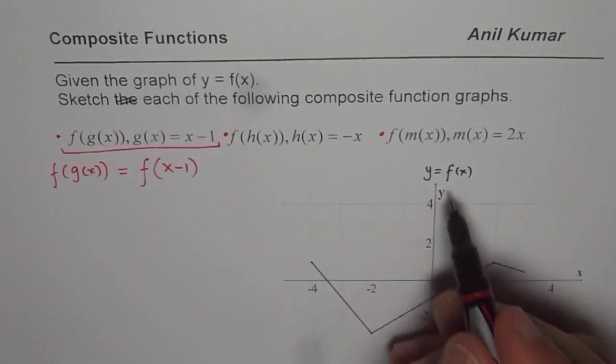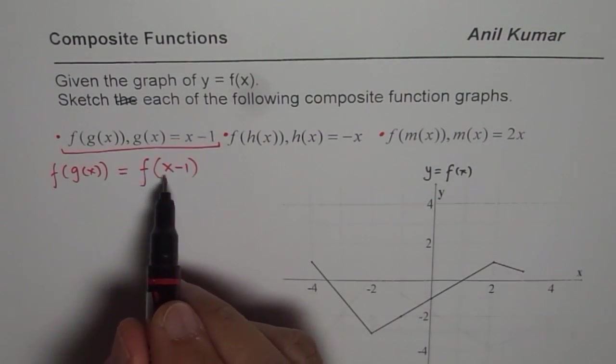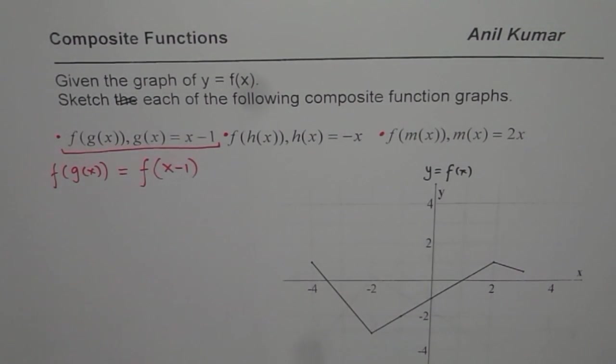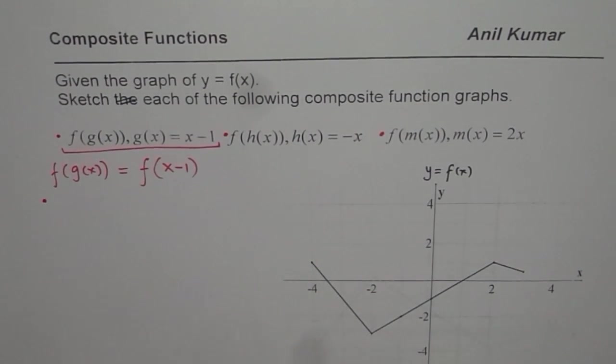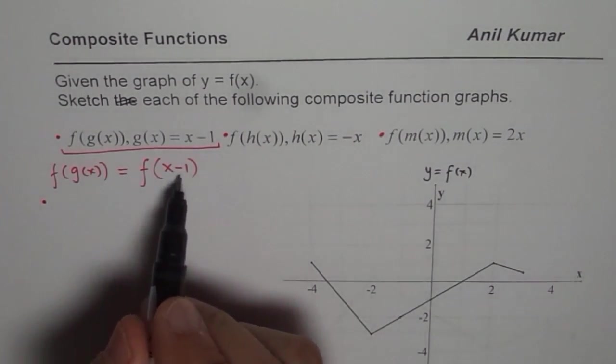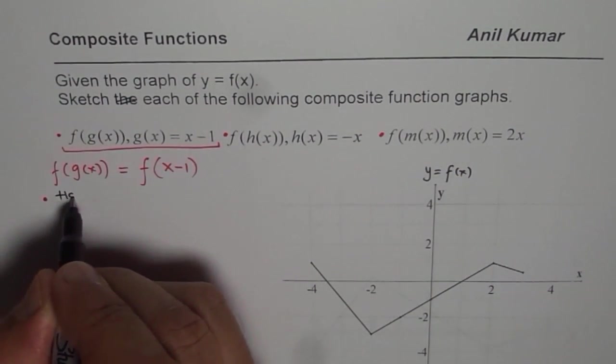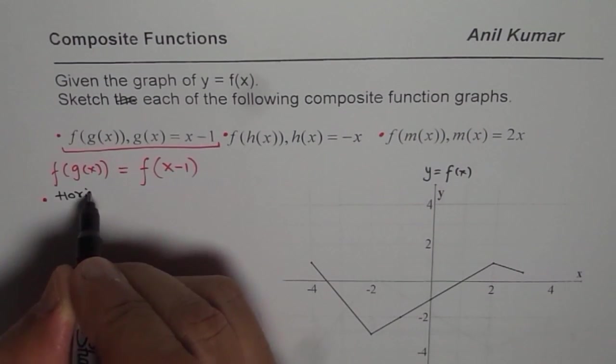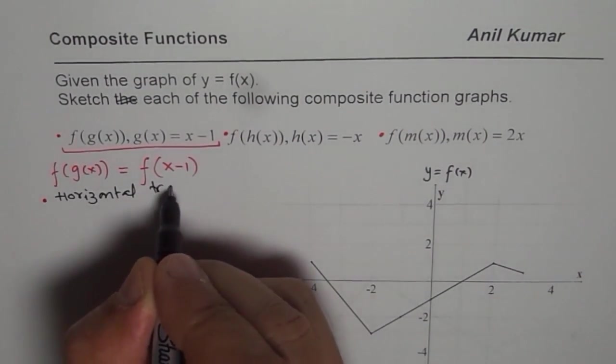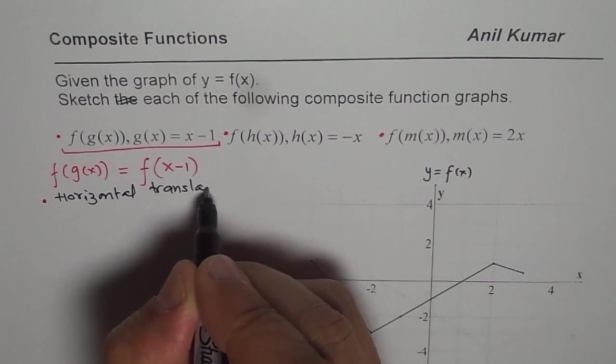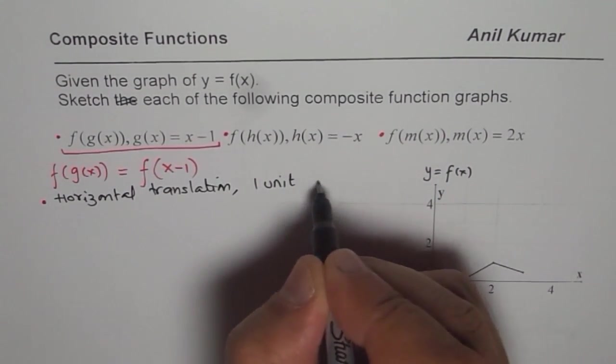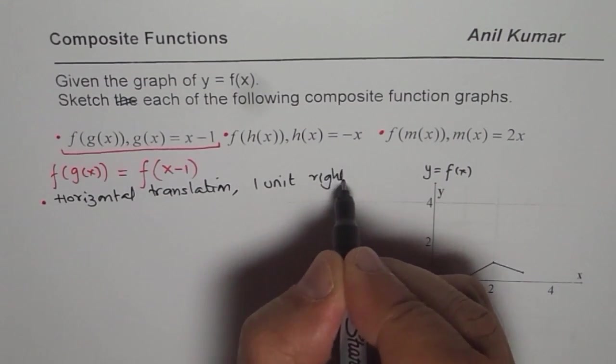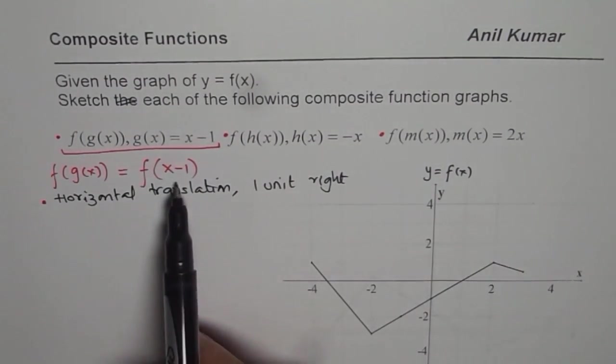So basically we have given f of x and if I say sketch x minus 1, what does that mean? It means that you have to do horizontal translation of one unit to the right. Horizontal translation, one unit right. So I hope you appreciate by this composition of function.